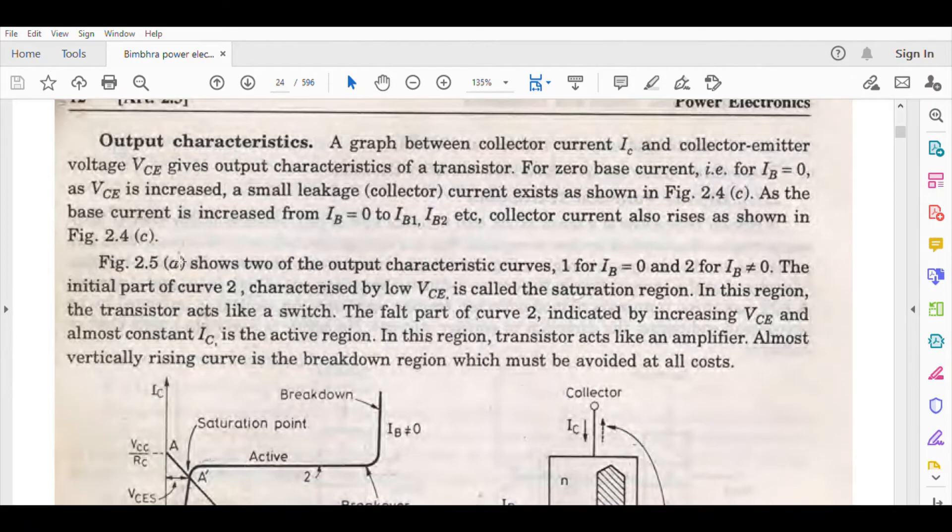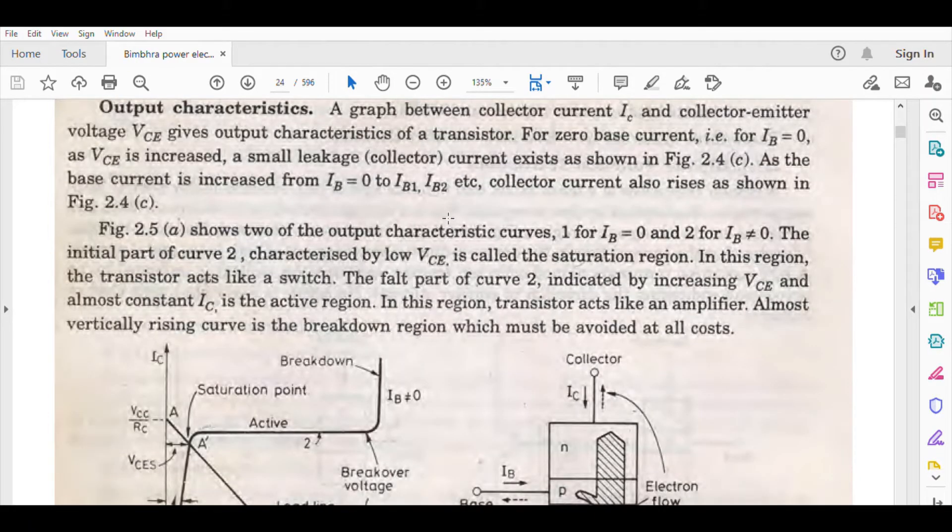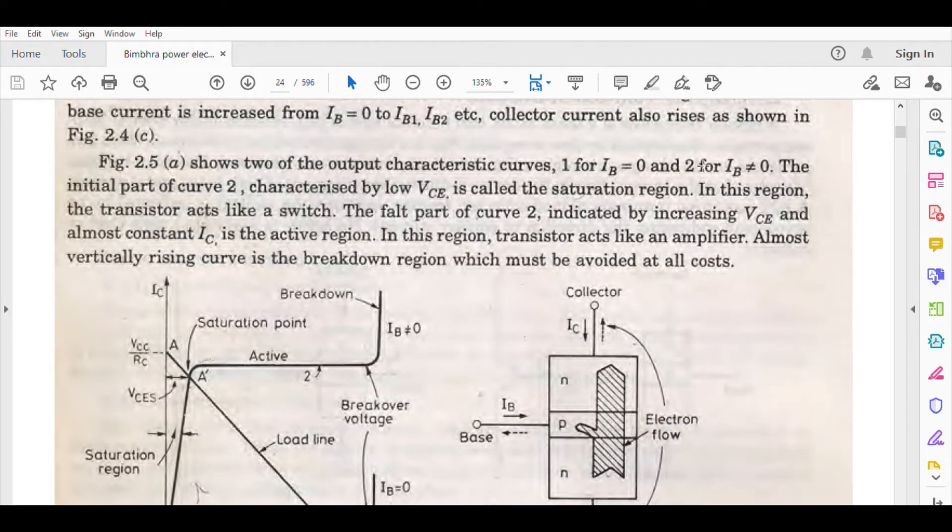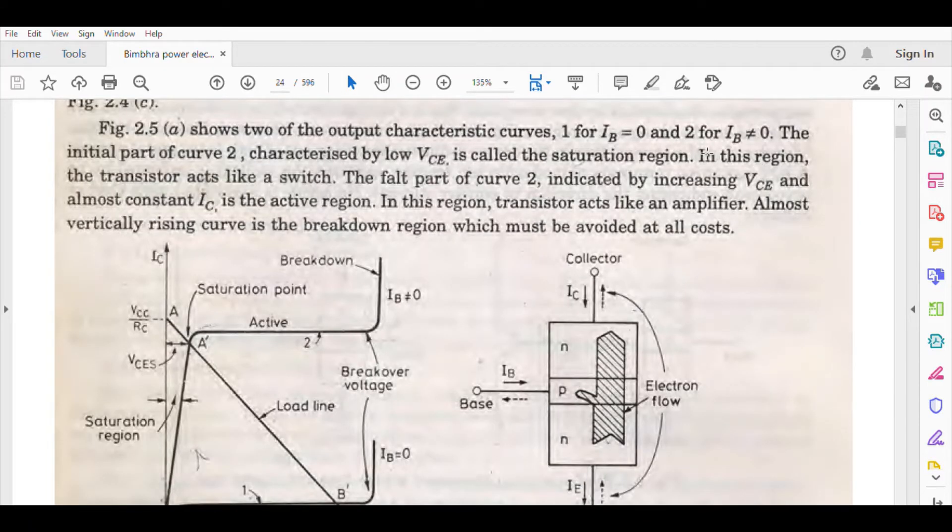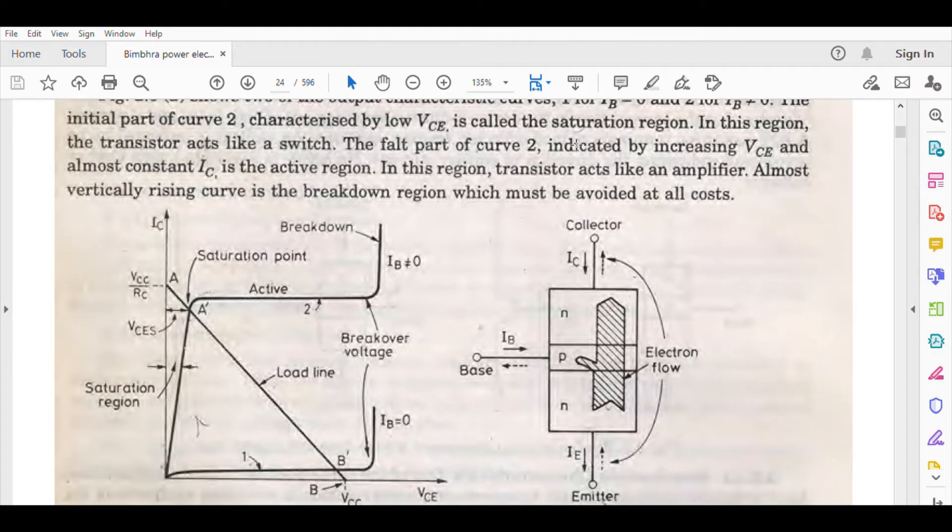Now let's look at Figure 2.5a. This is the output characteristic curve for IB value equal to zero and IB not equal to zero. The initial part of curve 2, characterized by low VCE, is called the saturation region. This is called the saturation point. In this region, the transistor acts like a switch.